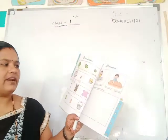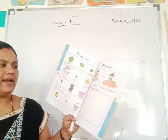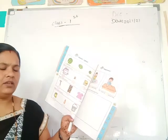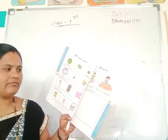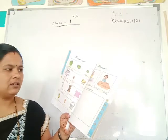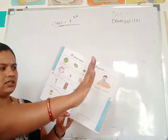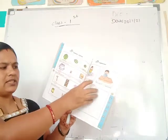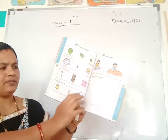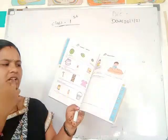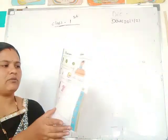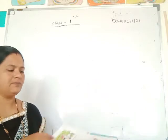Trace your friend's hand span here. You trace your hand span and place it here. Space is given — in homework, you complete this.